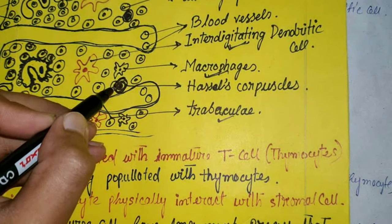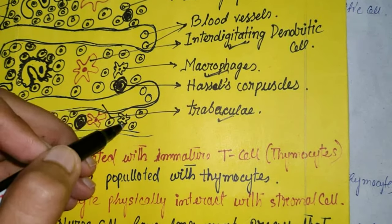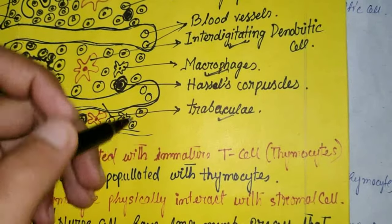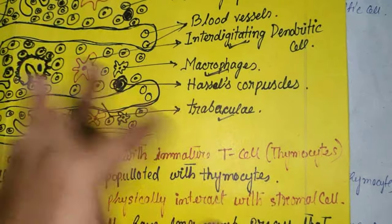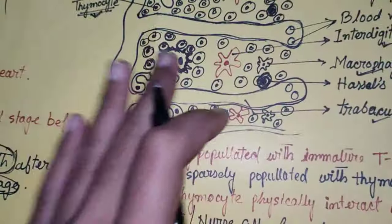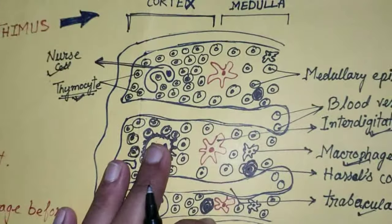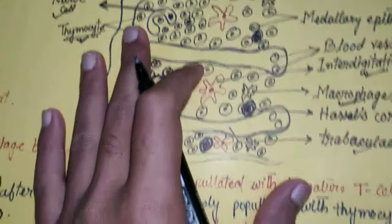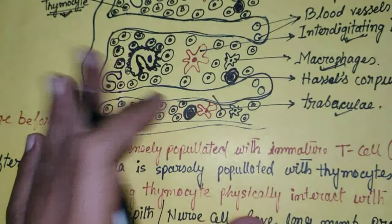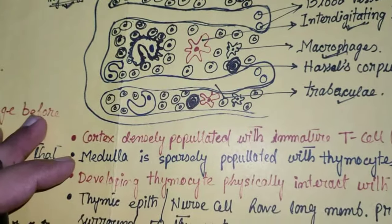Science ko abhi pata nahi ki Hassall's corpuscle ka kaam kya hota hai. So that was the total blueprint of the thymus gland. Thank you.